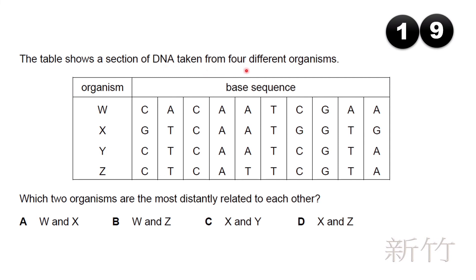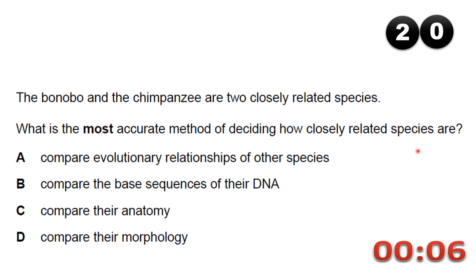The table shows a section of DNA taken from four different organisms W, X, Y, and Z. Which two organisms are most distantly related to each other? Looking at the sequences: Y and Z are more closely related as their sequences are more similar. When comparing W and X, their sequences are the most varied and different from each other. So W and X are the most distantly related.